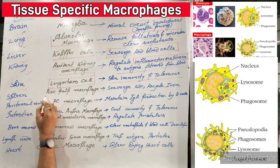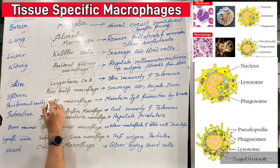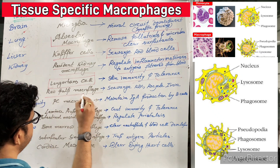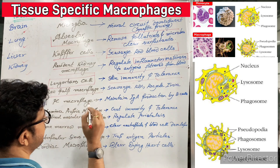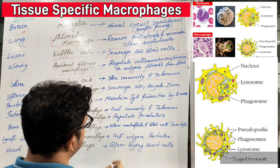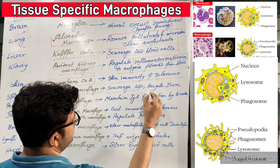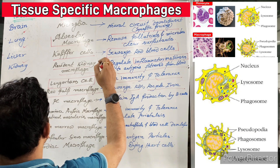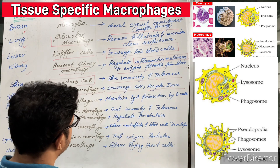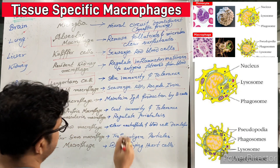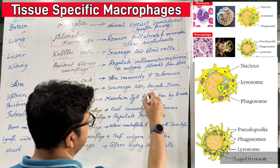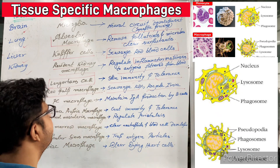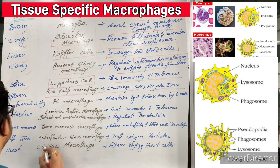Now coming to the spleen — the spleen macrophages are called red pulp macrophages. What do they do? They scavenge RBCs and recycle iron. So they are somewhat similar to the liver Kupffer cells, but they also help in recycling iron so that new RBCs can be generated.